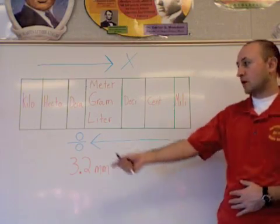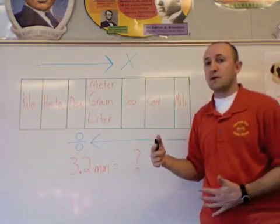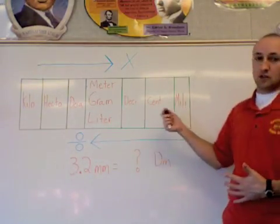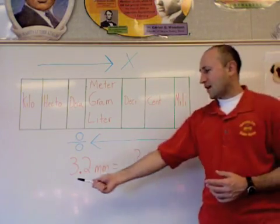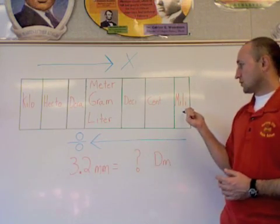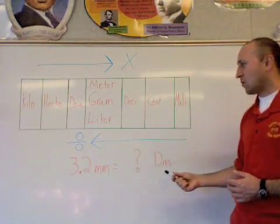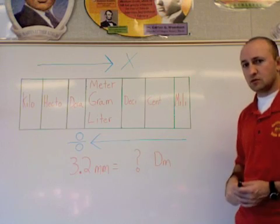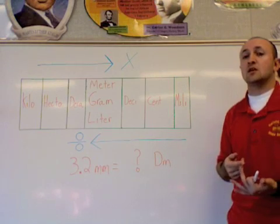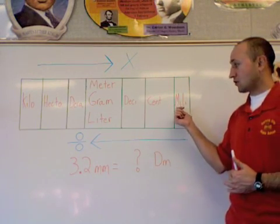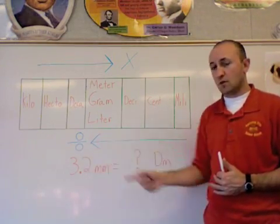In the previous example, we went from larger units to smaller units. This time around, we're going to go from smaller to larger units. Let's take a look at our example problem. Let's say we have 3.2 millimeters, which we know is all the way to the right. We want to find out how many decimeters that equals. We're going to count the number of spaces that we have to move to the left this time because we'll end up doing a division problem.